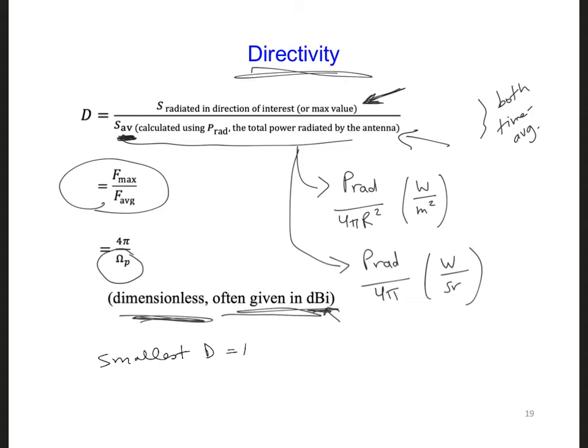And this is because s max can only be the same or bigger than s average for any antenna. So, for example, if we say the directionality of a half-wave dipole, D half-wave, is 1.64, if we were to calculate that and determine it's 1.64, this means that the amount of power radiated in the direction of maximum radiation for a half-wave dipole is 1.64 times higher than that for an isotropic antenna.